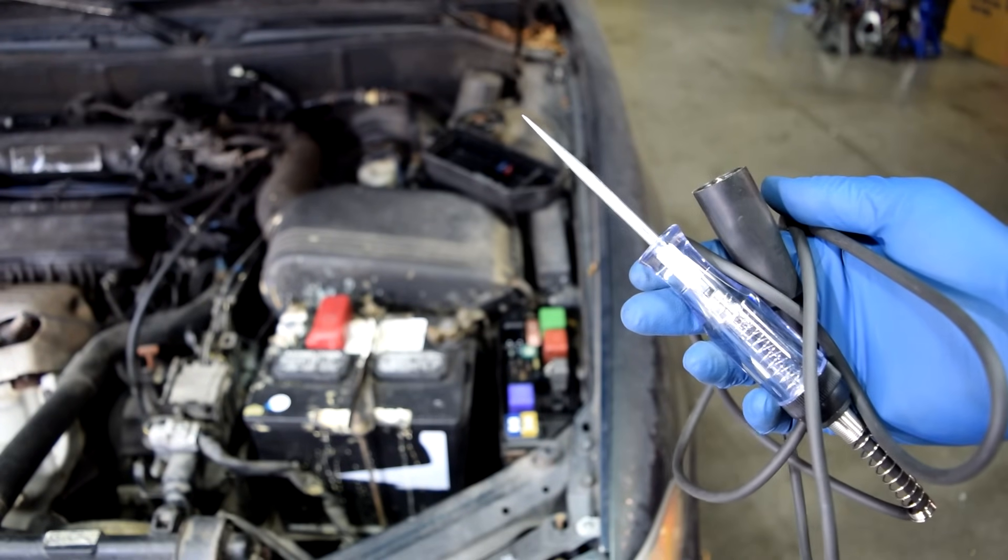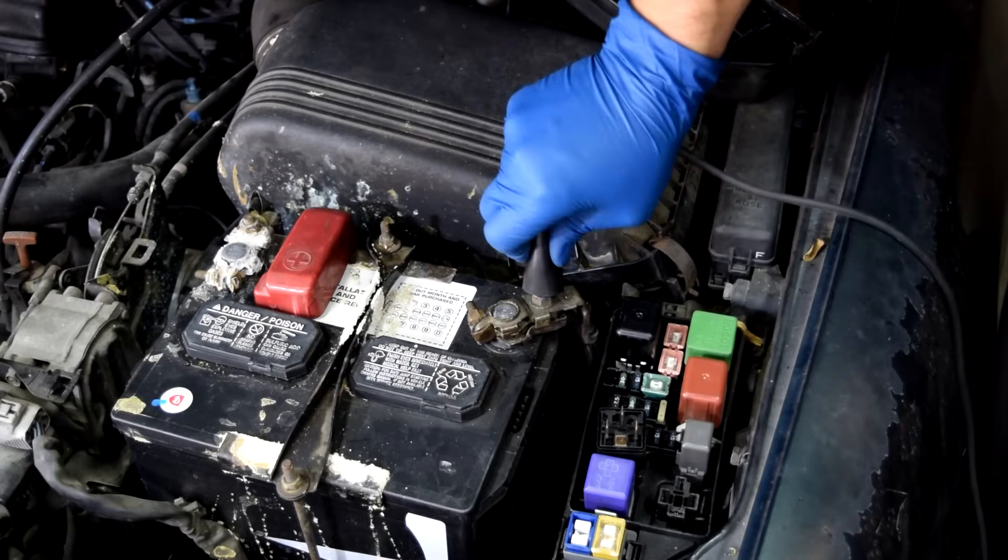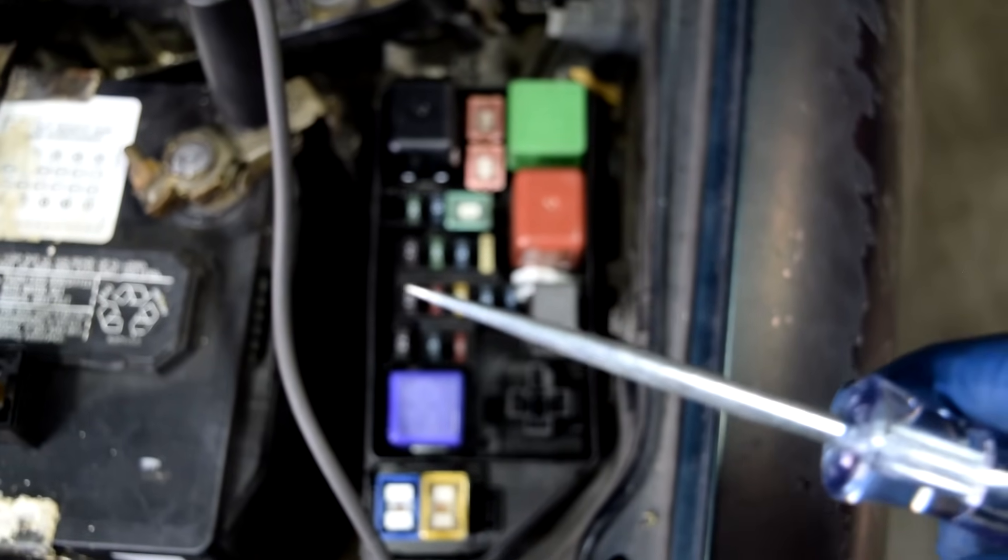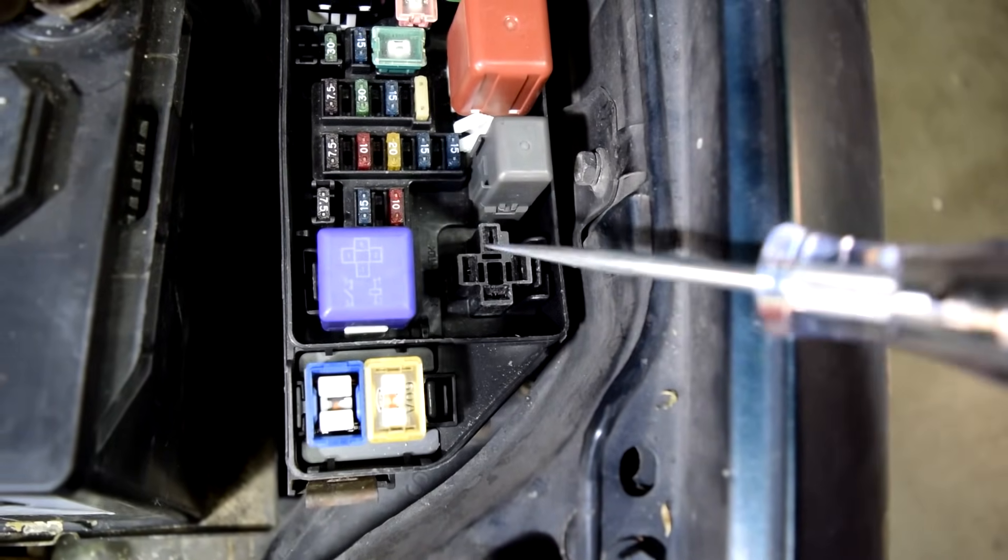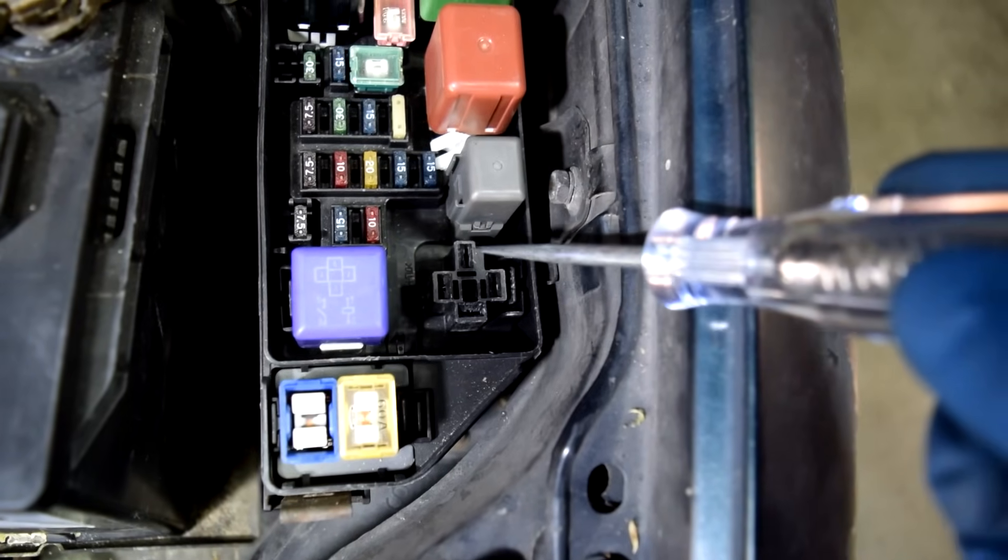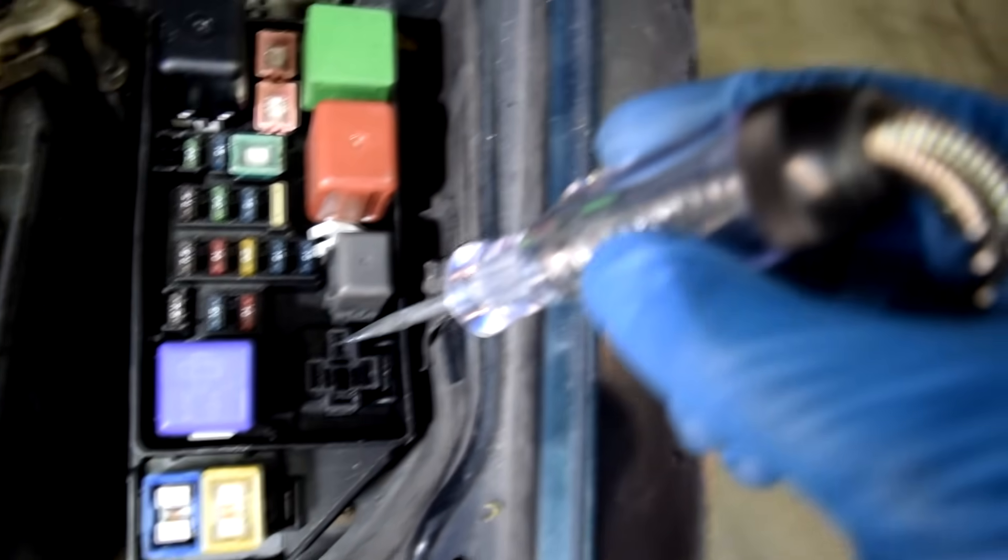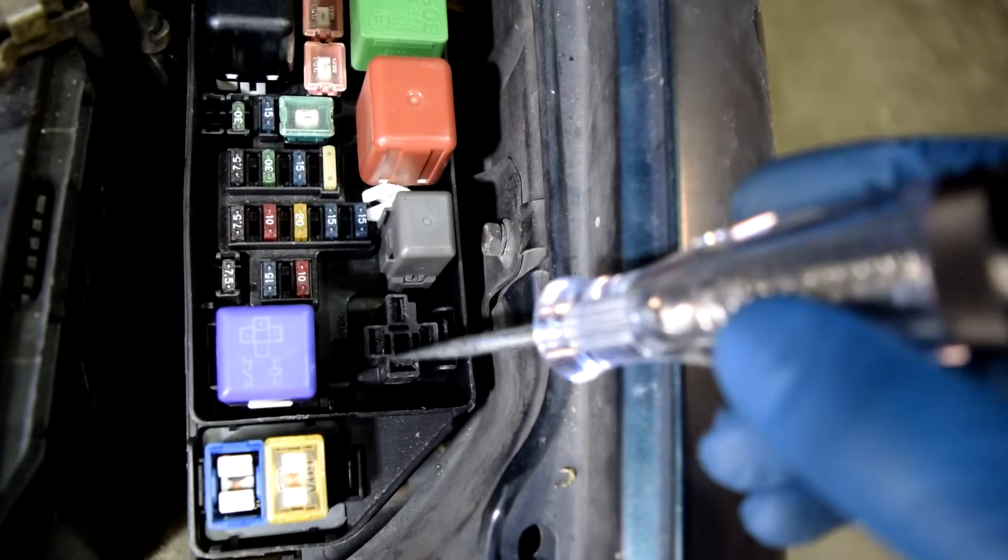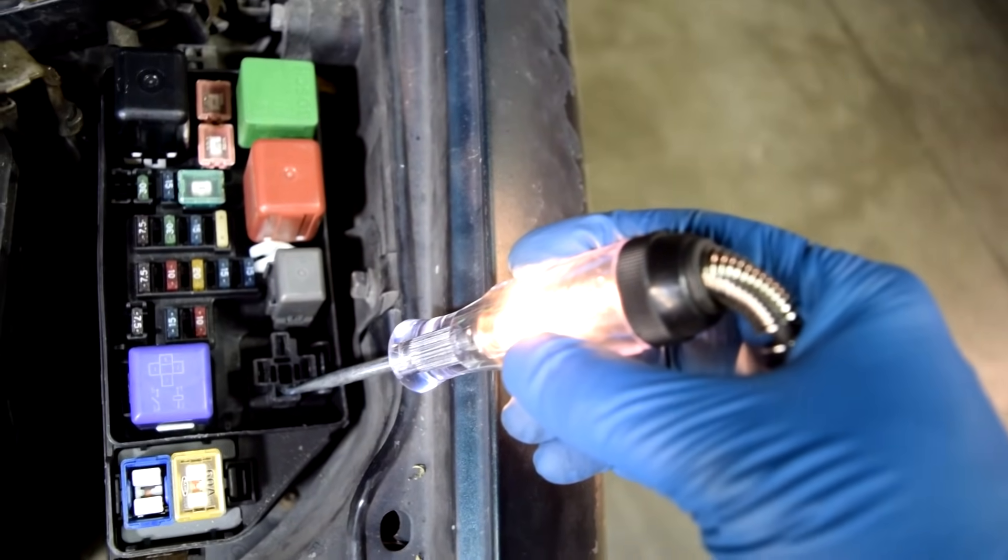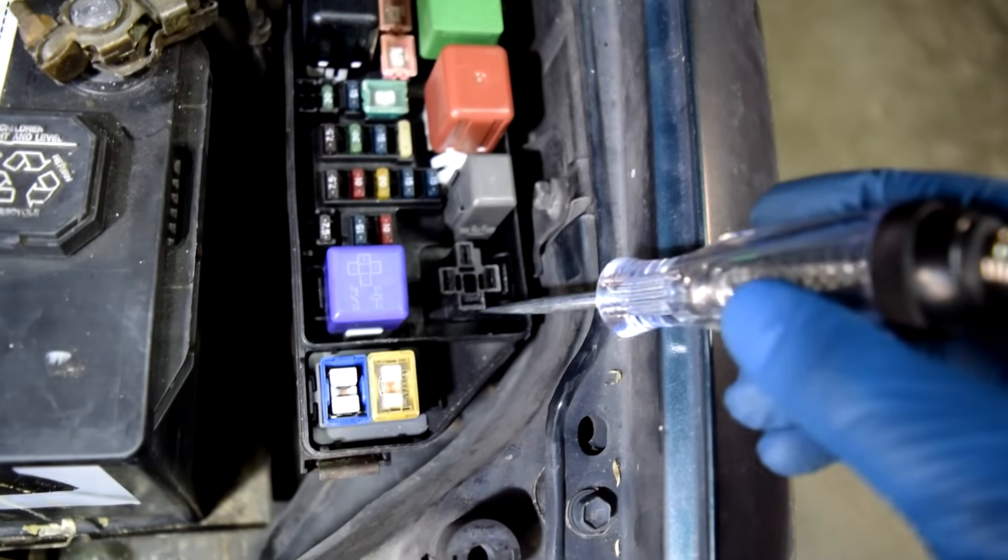Next you want to grab yourself a test light, attach this end to battery ground, and then with the other end of our test light we're going to probe these two terminals here and make sure we only have power going to one of them. Here's number 30. Nothing. And here's number 87. There. Our test light lights up telling us we have battery voltage here.